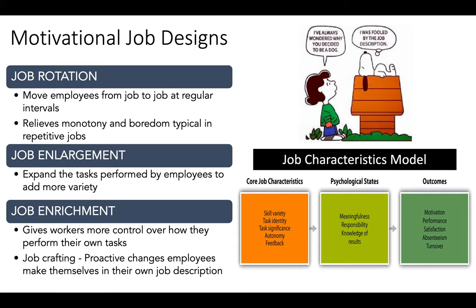Doing more things is more motivational than doing fewer things or using only one skill or one task. Job rotation, enlargement, and enrichment are ways to broaden the job in different ways. Job rotation broadens a person's exposure to different tasks by moving them around — moving employees from job to job at regular intervals. For example, you get hired at Walmart or Target as a first-line manager and they rotate you through cashier, stocking shelves, back office, and HR so you get an overall sense of the organization.